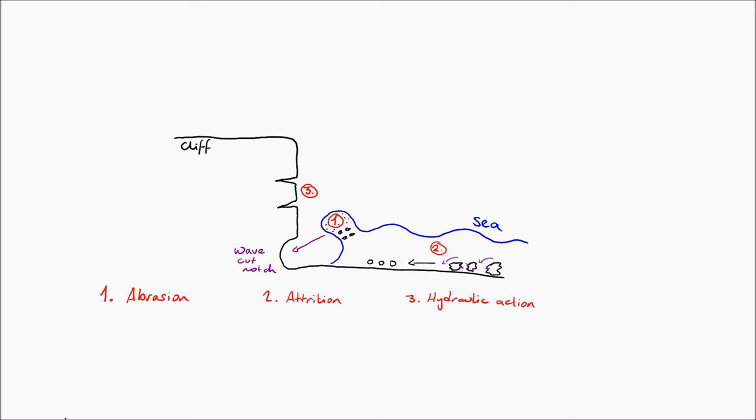Number three. We have hydraulic action. Hydraulic action is actually the force of the wave and does two things. The force of the wave comes into contact with the cliff and the repeated hitting against the cliff causes erosion because of the energy that it has,